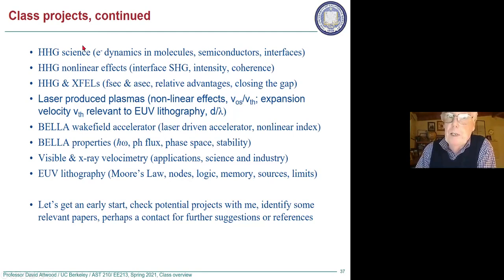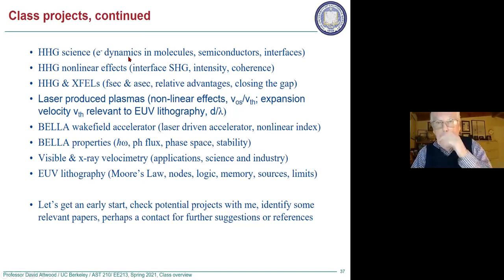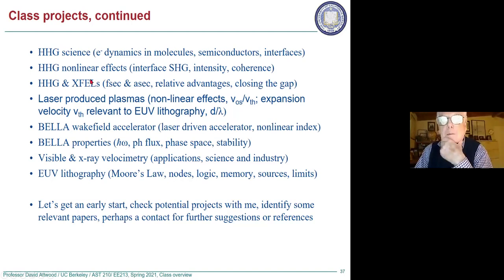There are some things here for people from the chemistry department or anyone else — a couple of high harmonic generation topics. What's the science? Some examples we won't cover much in class include electron dynamics in molecules and semiconductors at interfaces — so interfaces comes up again. Another would be nonlinearity. You can focus the high harmonic radiation down to very high intensities. How could it be used at interfaces to produce second harmonic generation — some EUV going in from a free electron laser or from a high harmonic source — and how can that be used for probing the interfaces?